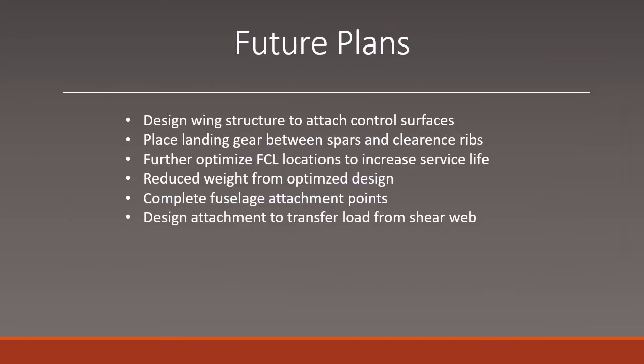Our future plans consist of designing a wing structure to attach control surfaces, placing the landing gear between the spars and the ribs, optimizing our aircraft as much as possible, and completing the fuselage attachment points along with designing the attachment to transfer the loads from the shear web. This concludes our presentation. Hope you enjoyed it. If there's any questions, let us know.